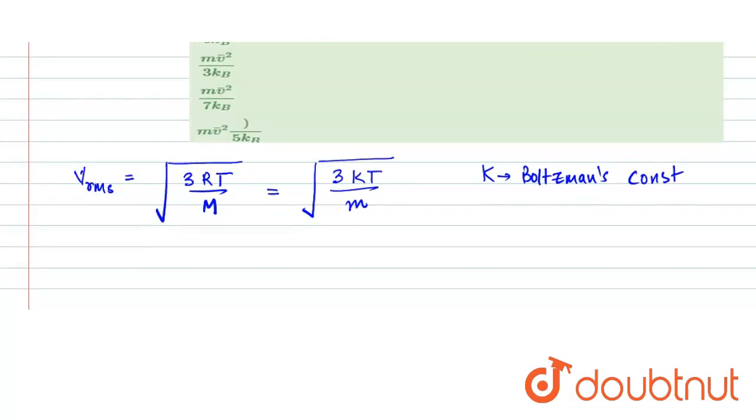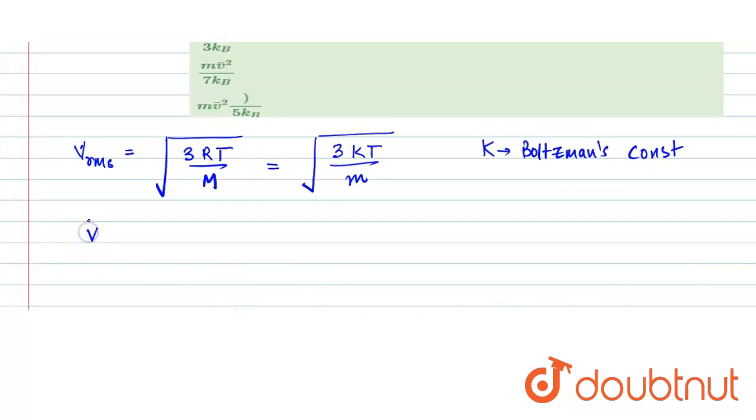And T is the absolute temperature. Alright, now let's use the same relation in the given problem. So here, the V RMS is denoted by V bar. That is equals to the root of 3 into Kb into T divided by M.